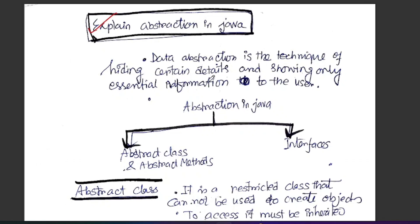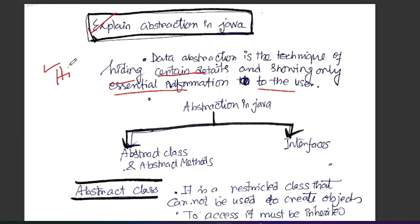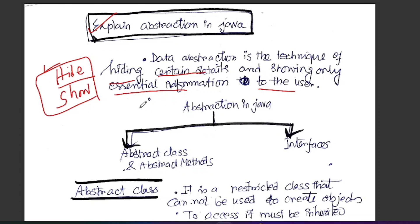Data abstraction is the technique of hiding certain details and showing only essential information to the users. Abstraction is the technique where we need to hide the data and methods. There are some data that we have to show to the user. This is the mechanism of hiding certain details and showing only essential information to the user.